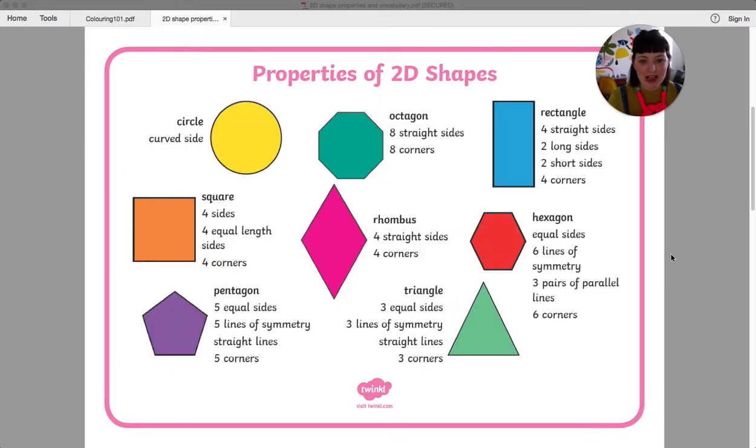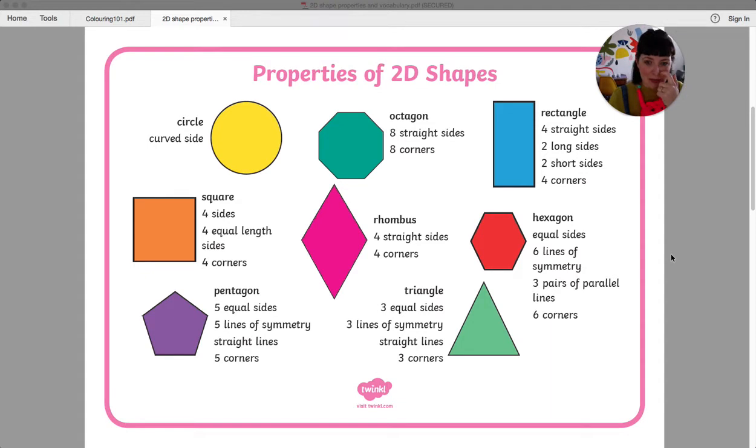Now if I scroll down, these are some of the common 2D shapes that you should be familiar with. You may know some, you may not know others. Look at a circle for example. Now sometimes people say a circle doesn't have any sides because it just continues forever, but I would say it has one big curved side. It's a big round shape.